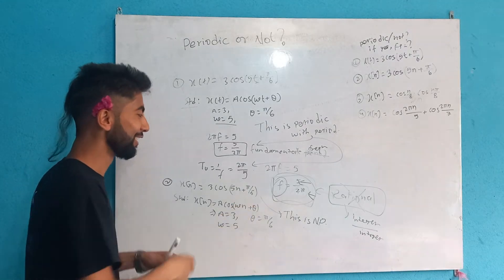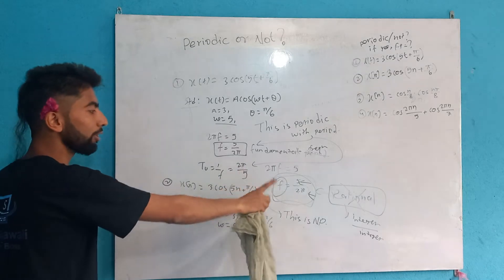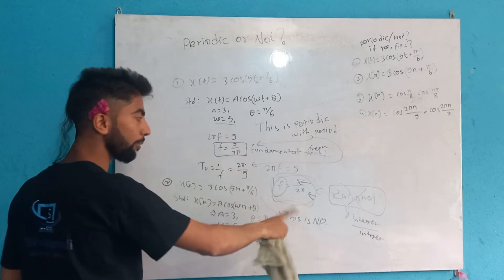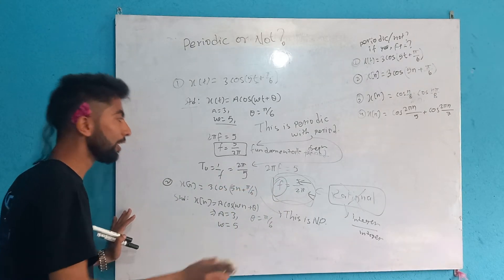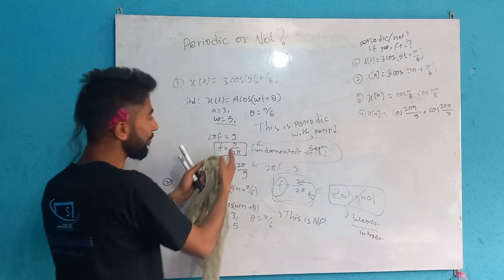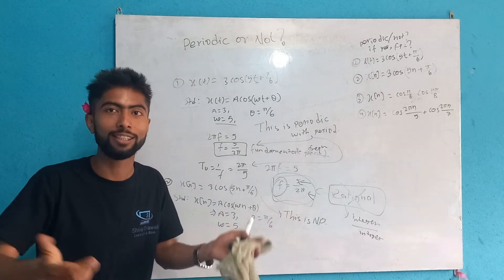5/(2π) is not a rational number. A rational number is defined as the ratio of two integers — integer divided by integer — not a float or irrational number. Since 5/(2π) contains π, it is not rational.